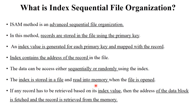The index is stored in a file and read into memory when the file is open. If any record has to be retrieved, it is based on the index value, the address of the data block is fetched, and the record is retrieved from memory. This is the concept of index sequential file organization — you can access data through the index, which is the primary key.